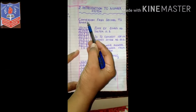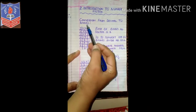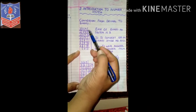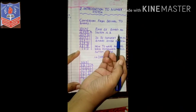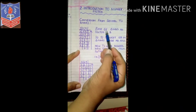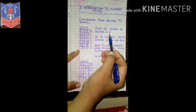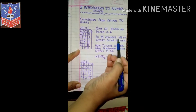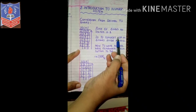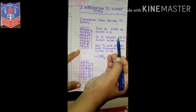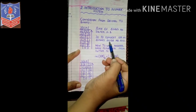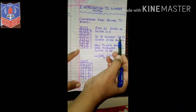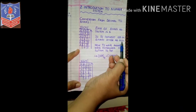Now let us learn conversion from decimal to binary. We are converting a decimal number to a binary number system. We know that the base of the binary number system is 2, as we learned before in the third session. To convert any decimal number, here we will be converting the number 109 to binary. We have to divide that number by 2, so we will be dividing 109 by 2.